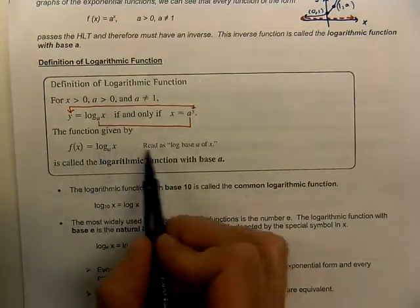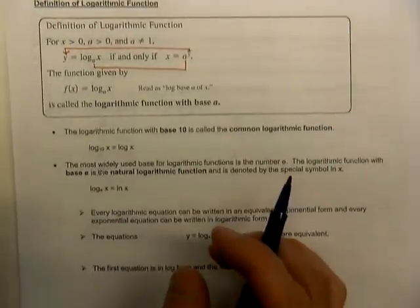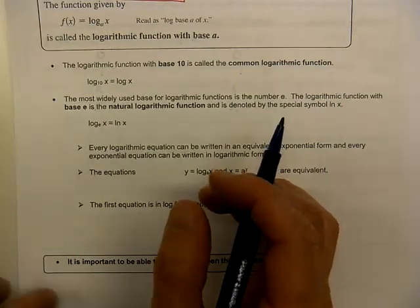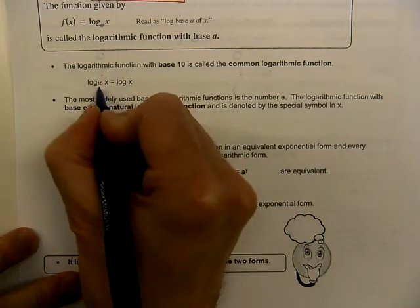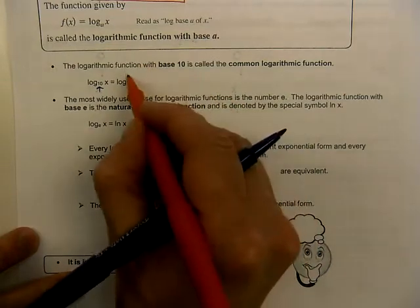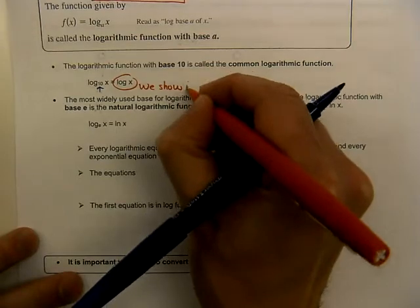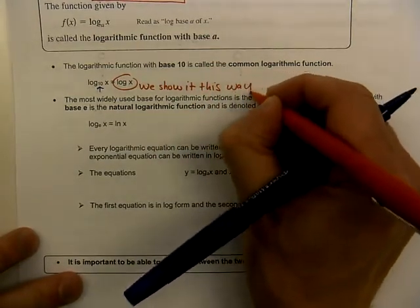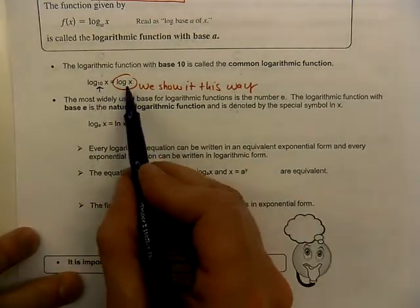So we would read this as log base a of x. When we have a few of these bases, we have a special form for writing them. If you have a base of 10, we call that a common base — we don't even bother writing the 10. We just say log of x, and that means it's the common base of 10, log base 10 of x.